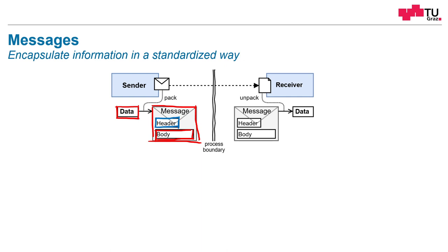When the sender has packed together its message, this message will be sent over the network or over the internet and will somehow reach a receiver — we will talk about how that in-between works in later patterns. The receiver gets this message and, based on the metadata in the header, has to read the header and look at what is in there: how big is the message, which format, which version, and so on.